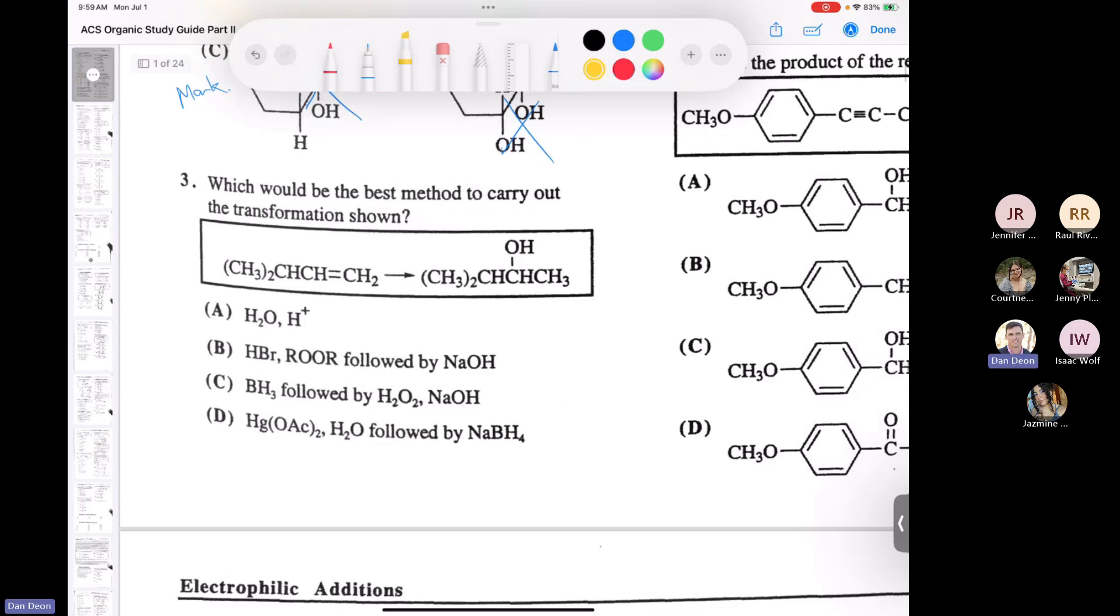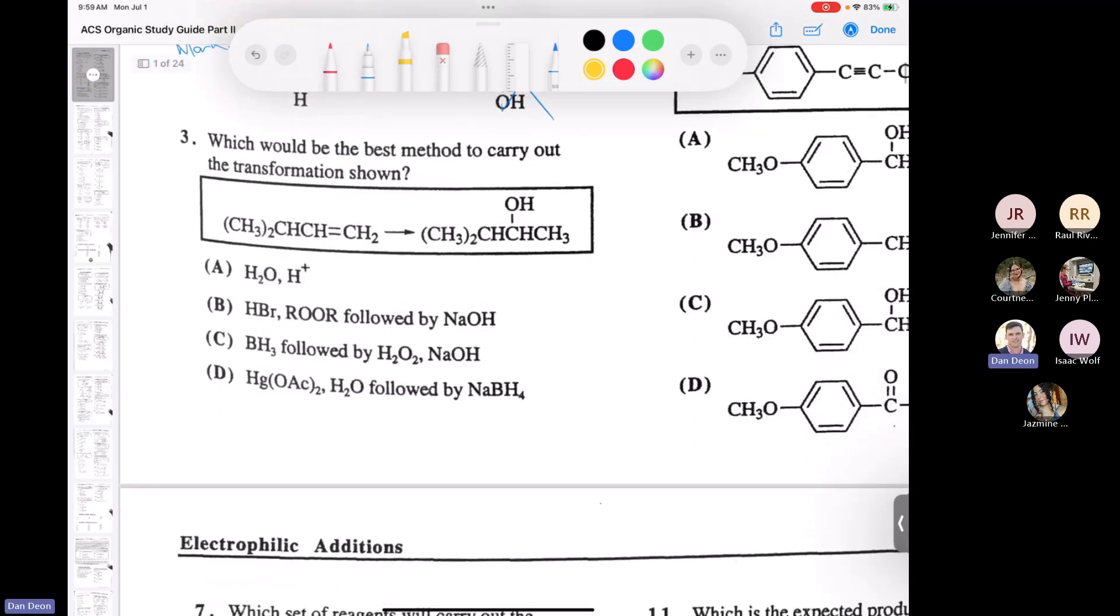Number three, what is the best method to carry out the transformation shown here? So if we take a look at this double bond, we're adding the hydroxyl to the carbon that has less protons. And so this is a Markovnikov addition of water across a double bond. So we can do that with water and acid, right? Remember these two together make H3O plus.